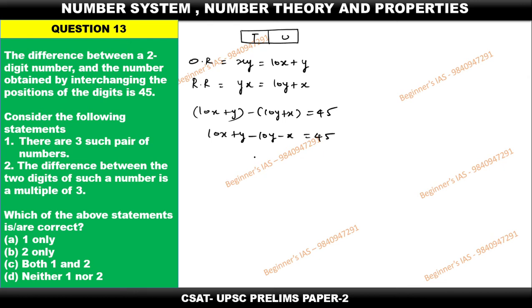Just simplify then 9x minus 9y which is equal to 45. Take that 9 as common: x minus y is equal to 45, then x minus y is equal to 5.